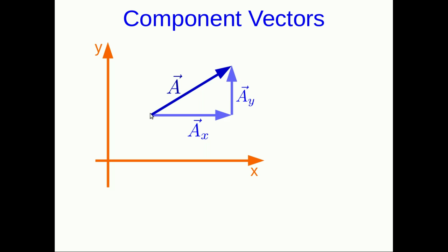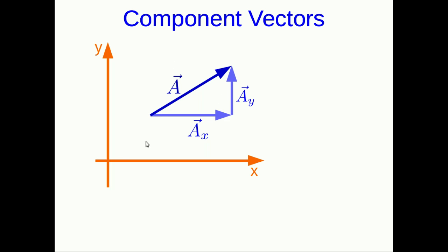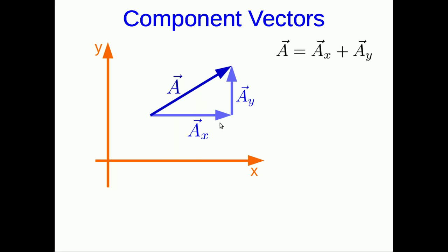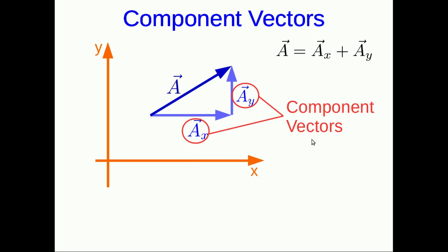You could have told Sam to walk the other way — along ay first and ax second — and Sam would have wound up in the same place, so the order doesn't matter. We've seen diagrams like this: when head-to-tail vectors take you to the same place as another vector, that tells us there's an addition relation going on. It's useful to think of vector a as being made out of ax and ay. ax and ay are special because they're parallel to the axes, and so we give them special names — we call them component vectors.